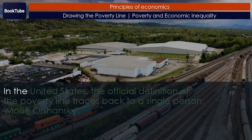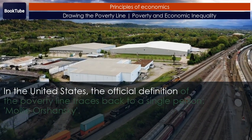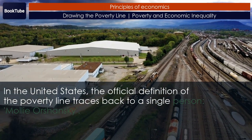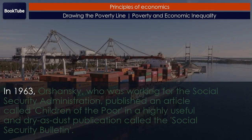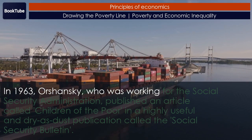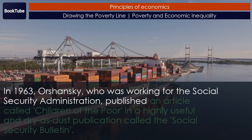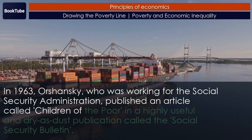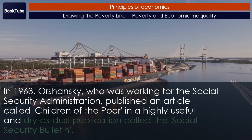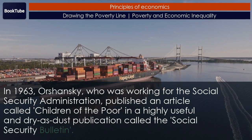In the United States, the official definition of the poverty line traces back to a single person: Molly Orshansky. In 1963, Orshansky, who was working for the Social Security Administration, published an article called Children of the Poor, in a publication called the Social Security Bulletin.